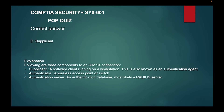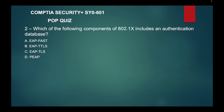The correct answer is D, supplicant. Following our three components of an 802.1x connection, we have the supplicant — a software client running on a workstation, also known as an authentication agent. We also have the authenticator, which is a wireless access point or switch.